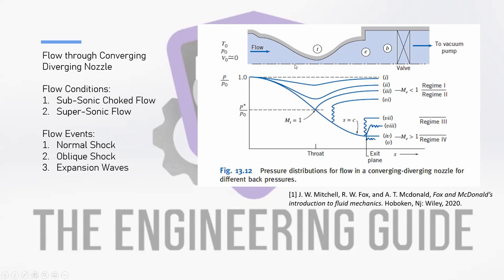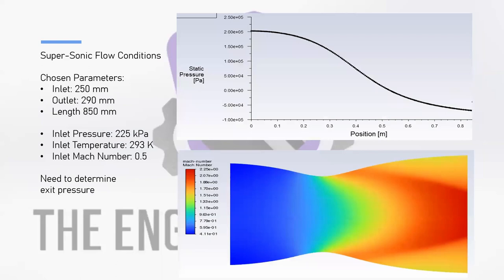As the flow progressed through the converging part of the nozzle, the flow would accelerate and we would see a decrease in pressure. But since it did not reach Mach 1 or sonic flow at the throat, the flow decreased in velocity and the pressure increased as it moved through the diverging part of the nozzle until the exit pressure. In this video we're going to take a look at the supersonic flow condition, where the flow through the converging part reaches a Mach number of 1 by the throat, and as a result the flow will continue to accelerate supersonically through the diverging part, and the pressure will continue to decrease until our calculated exit pressure.